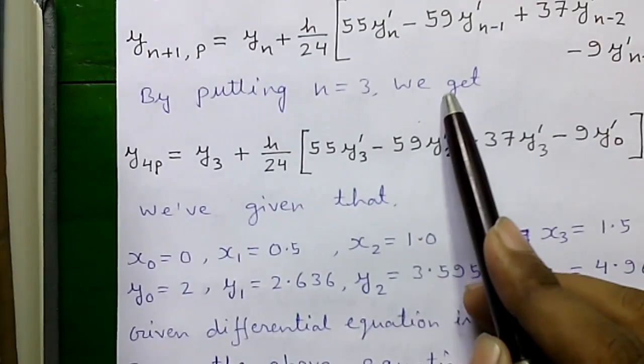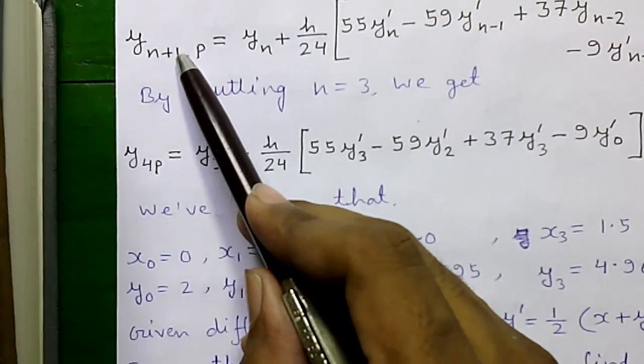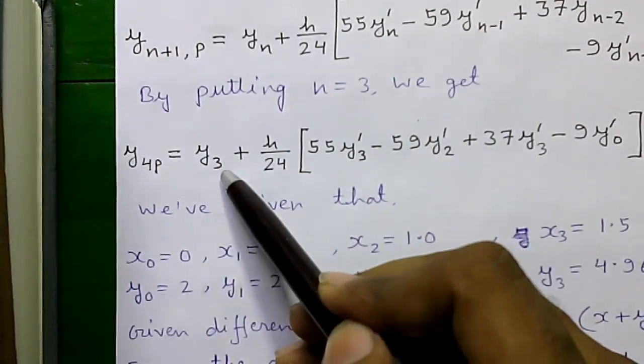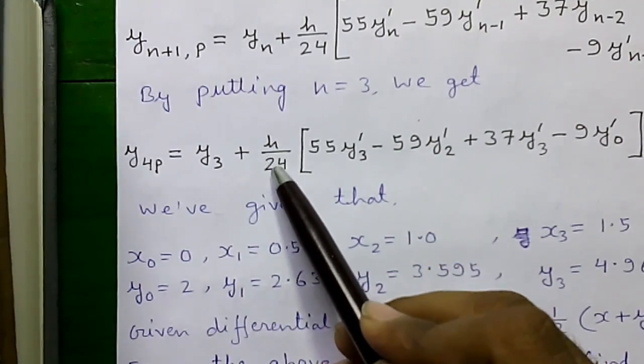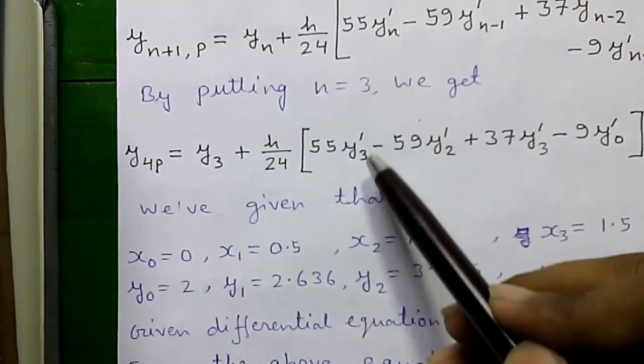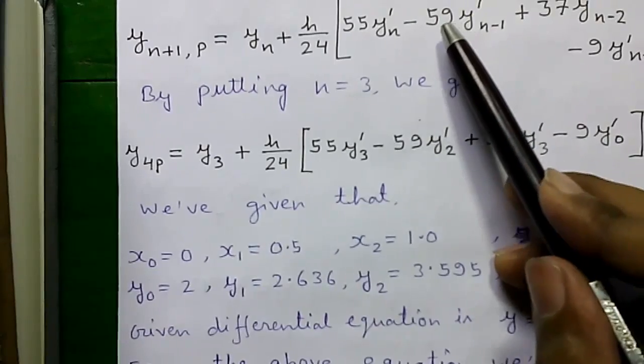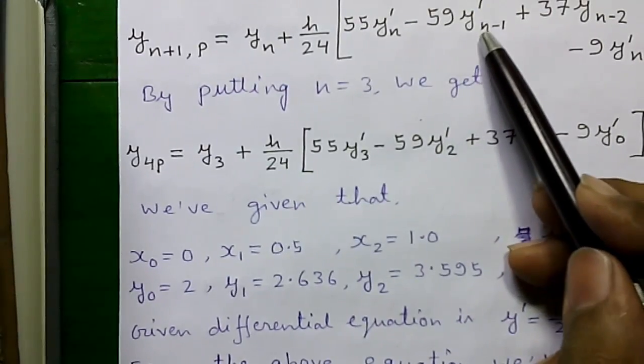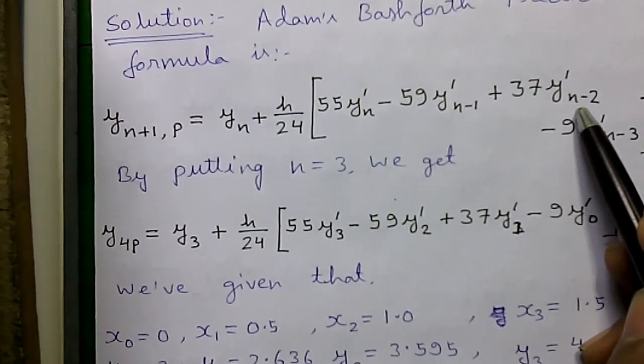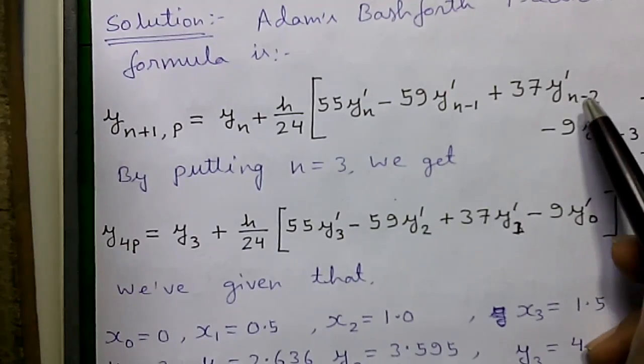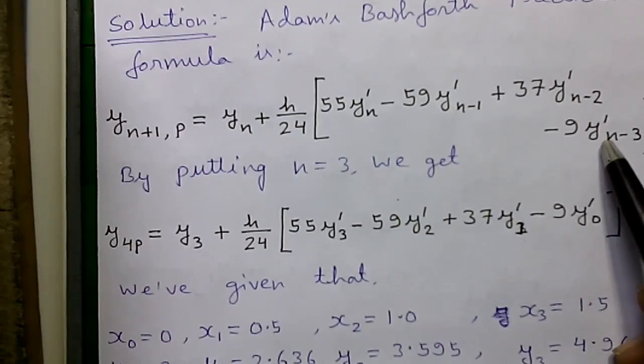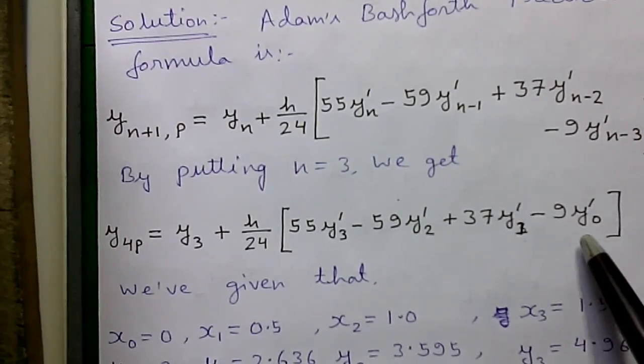So by putting n equals to 3 we will get y n plus 1 that is 3 plus 1, 4. y 4 p equals to y n that is y 3 plus h divided by 24 into 55 y dash n that is y dash 3 minus 59 y dash n minus 1 that is 3 minus 1, 2 plus 37 y dash n minus 2 that is 3 minus 2. So 37 y dash 1 minus 9 into y dash n minus 3 that is y dash 0.